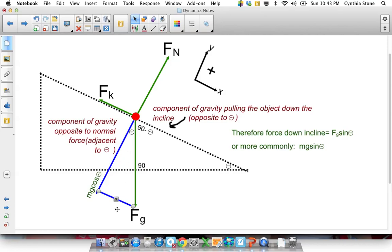So it's opposite, so I can say it's a component of gravity and it's going to be FG sine theta, or we call it MG sine theta. MG is FG. So this is what pulls an object down a hill.